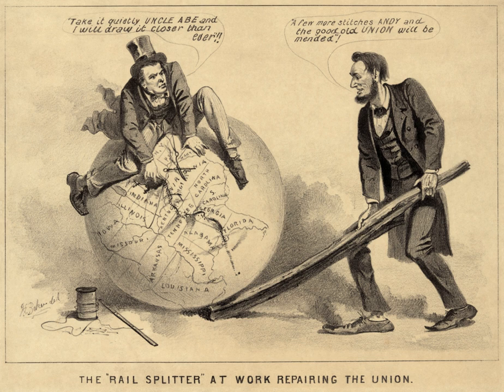The amendment's first section includes several clauses: the Citizenship Clause, Privileges or Immunities Clause, Due Process Clause, and Equal Protection Clause. The Citizenship Clause provides a broad definition of citizenship, overruling the Supreme Court's decision in Dred Scott v. Sanford, which had held that Americans descended from Africans could not be citizens of the United States.